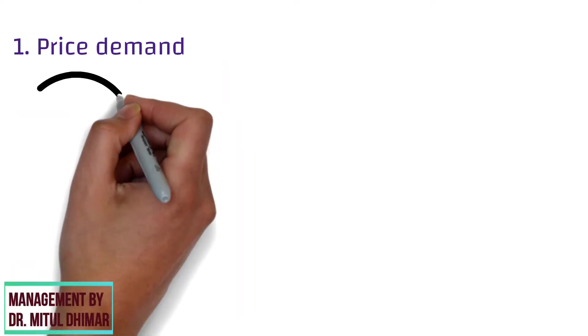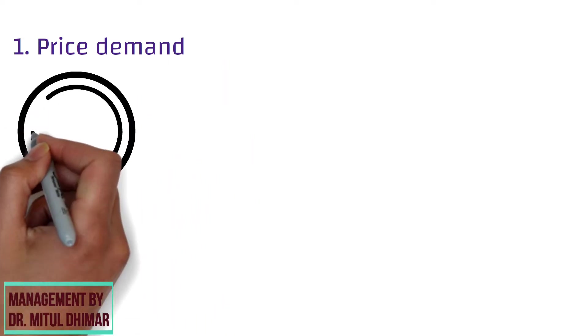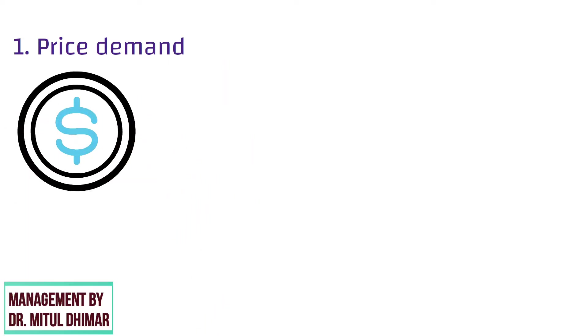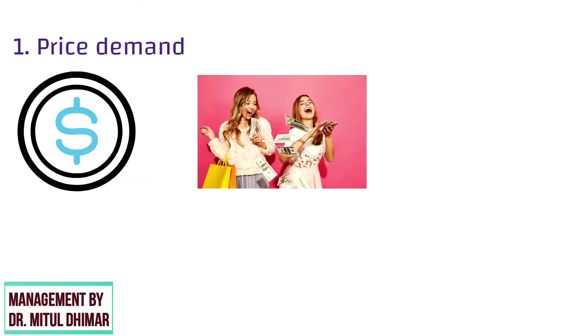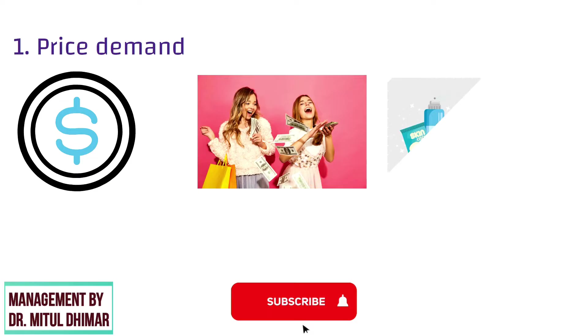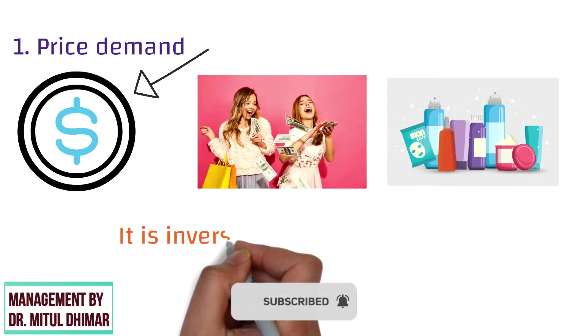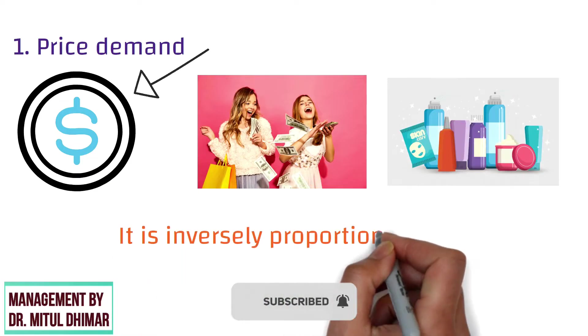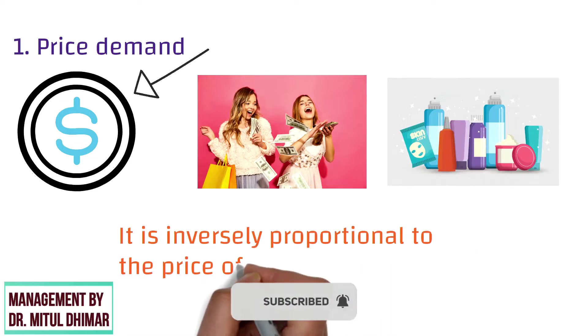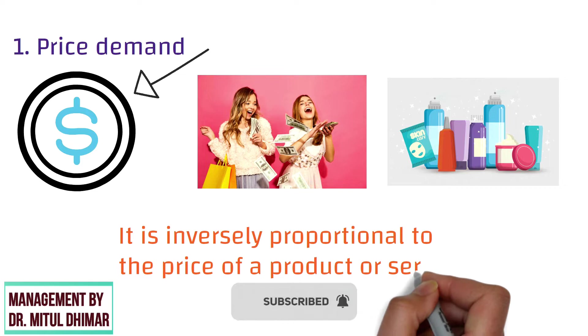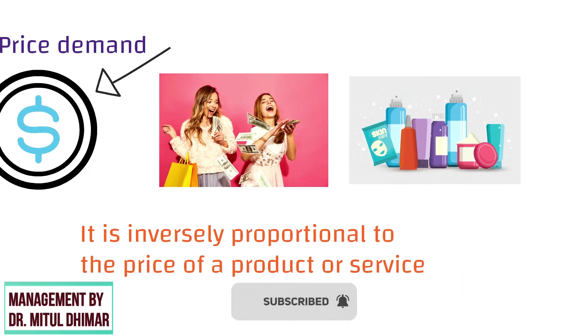Number 1: Price Demand. Price Demand relates to the amount a customer is willing to spend on a product at a given price. It is inversely proportional to the price of a product or service.